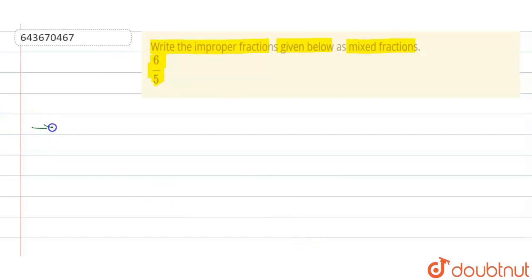First, our improper fraction that is given: improper fraction equals six by five. And we need to find the mixed fraction. Firstly, we can divide.